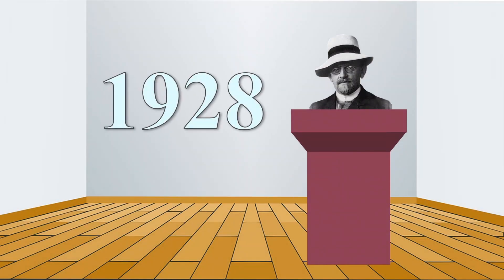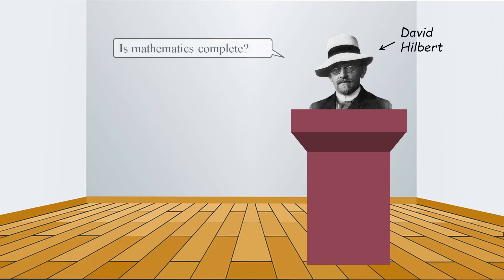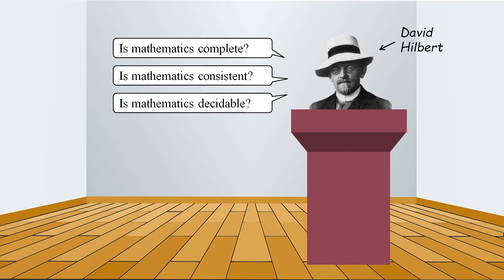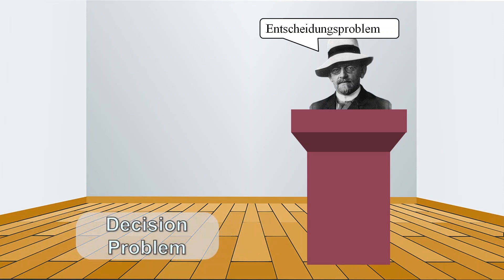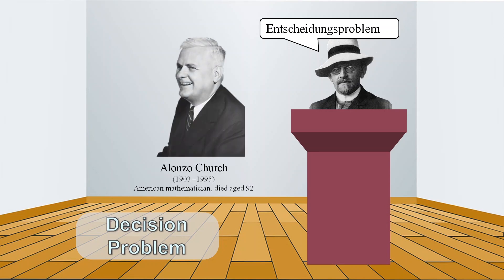In 1928, the influential German mathematician David Hilbert challenged the world's leading mathematicians to answer questions such as: is mathematics complete, is mathematics consistent, and is mathematics decidable. This third problem of decidability went by the German name of Entscheidungsproblem, which means decision problem in English.